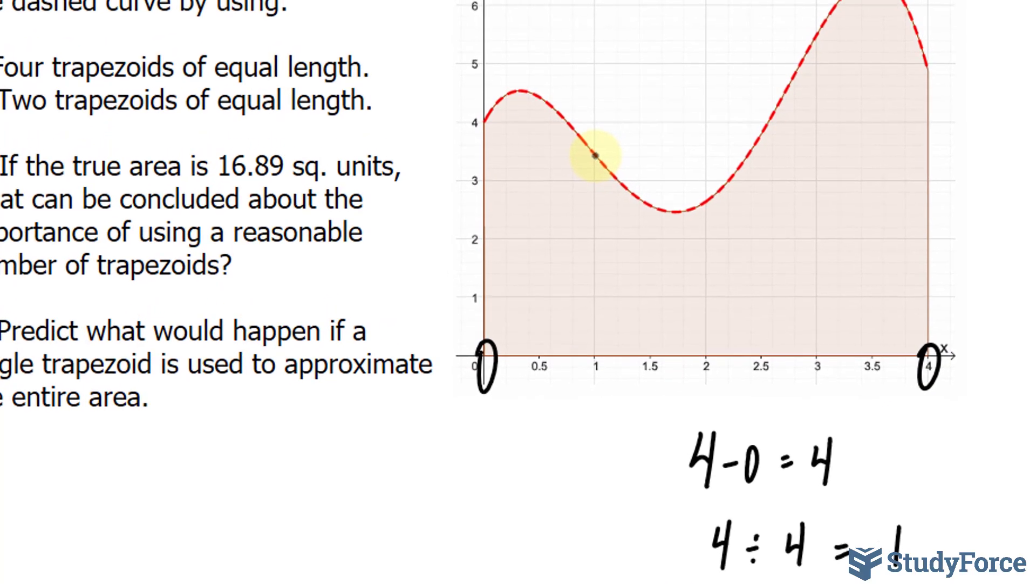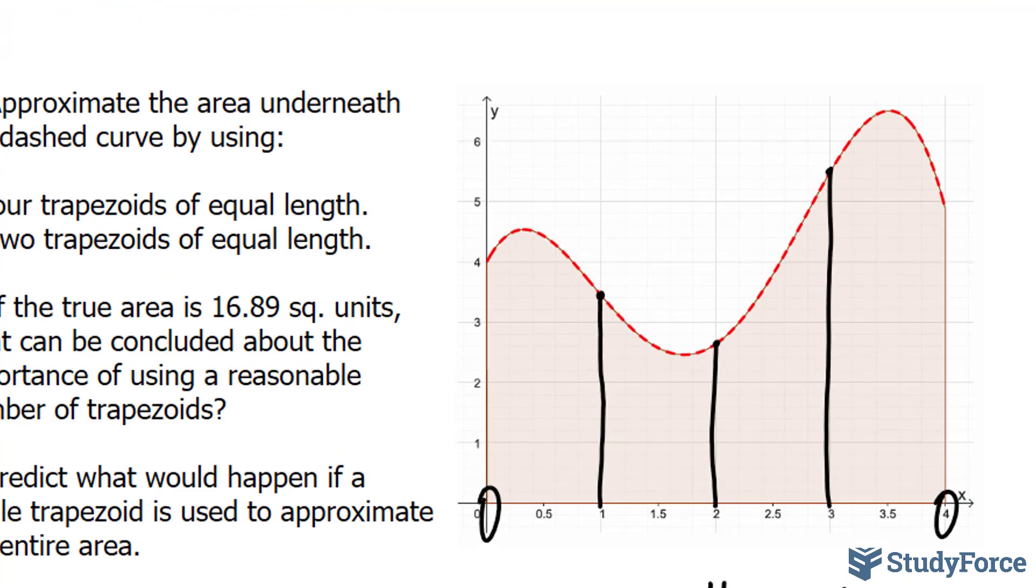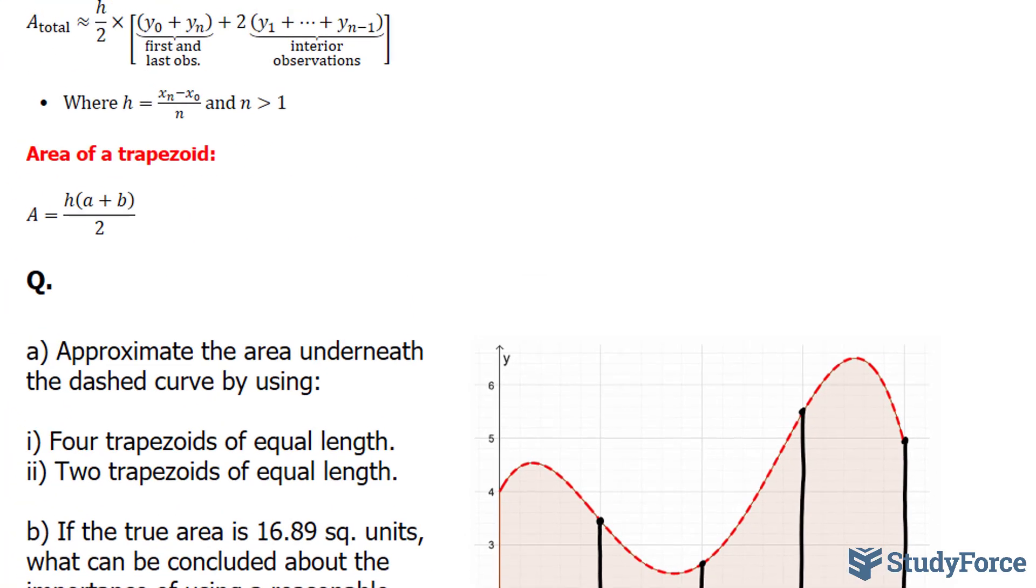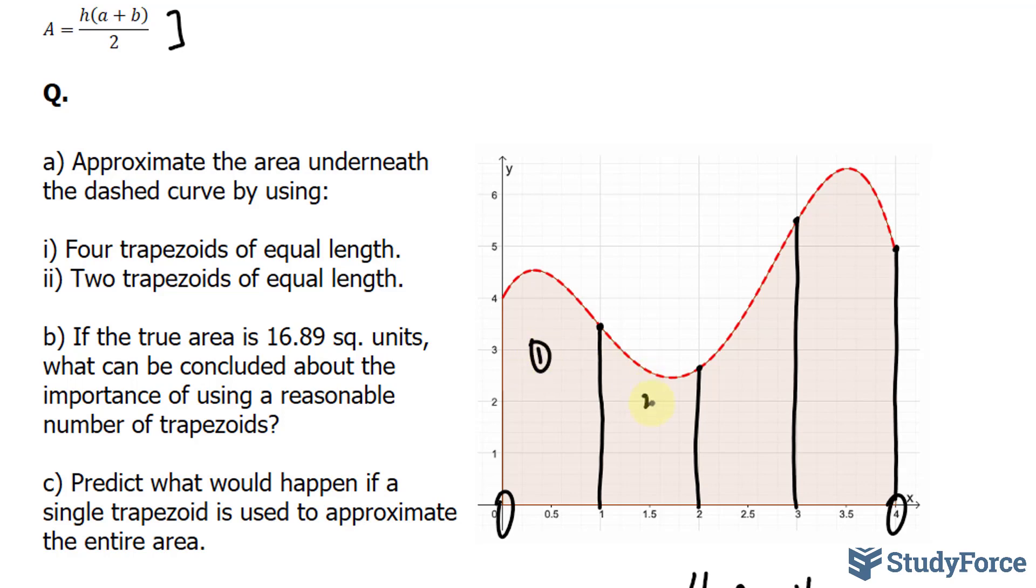So, every 1 unit along the horizontal axis will have a trapezoid. Let me go ahead and show you what I mean. So, we'll have a trapezoid within here, one within here, another along this range, and finally, one more here. That makes up our 4 trapezoids.